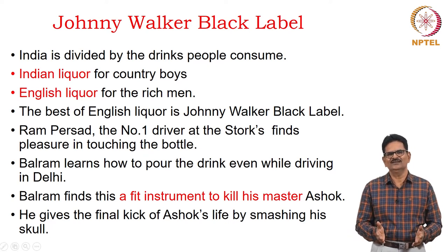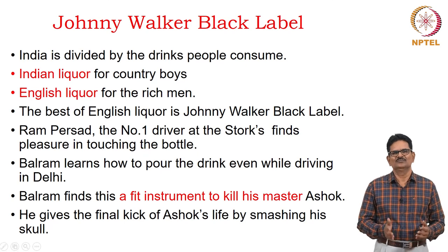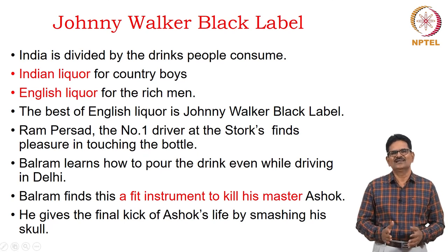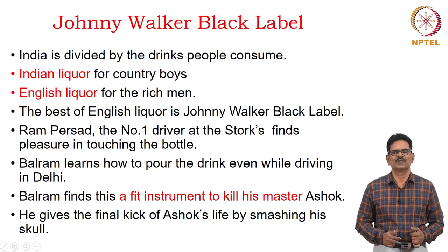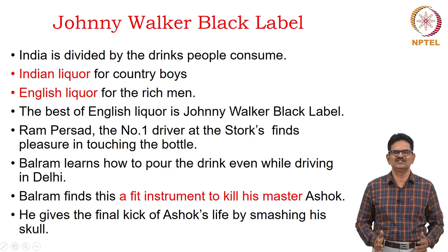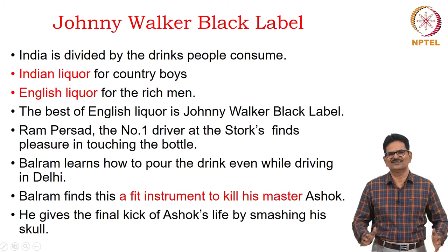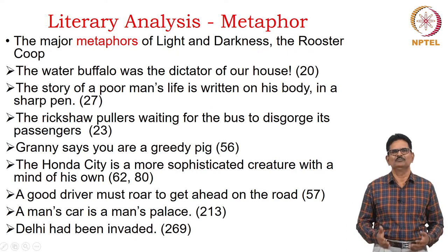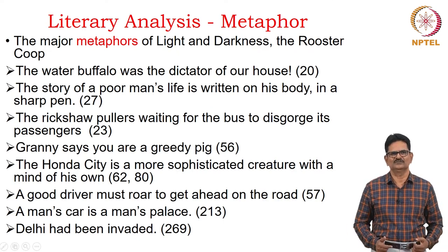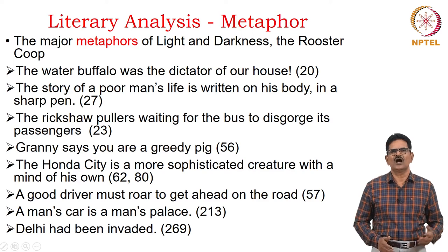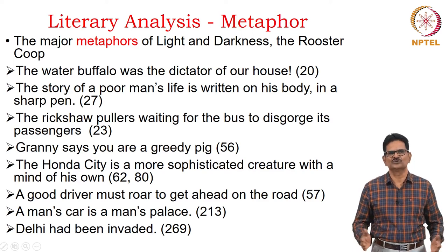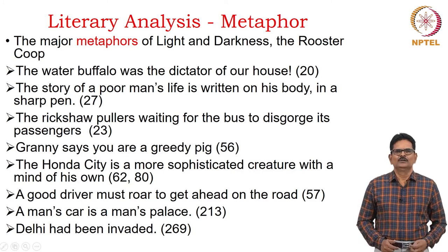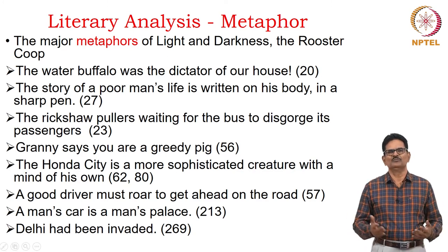At one time he serves wine with the same bottle. Balram at the end kills his master — he gives the final blow to Ashok by smashing his skull. Now we move on to the next topic: metaphor. We have some metaphors which are very important. The major metaphors of light and darkness and the rooster coop are present in this novel, and in addition to this, we have some more metaphors.